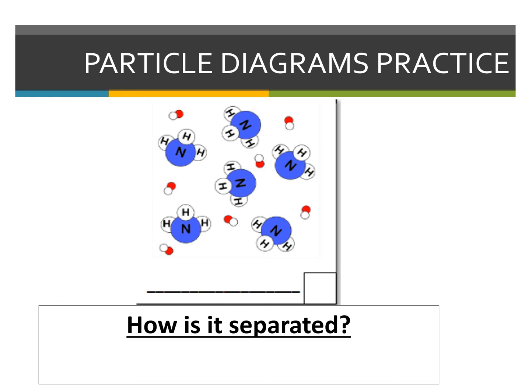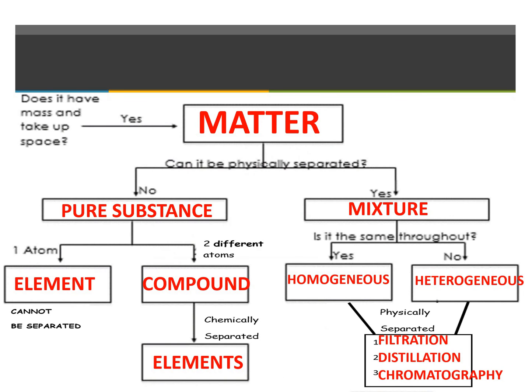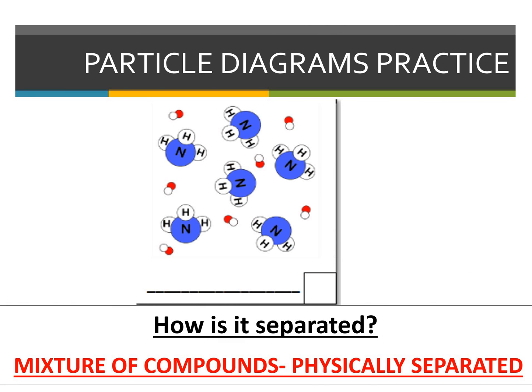Next up we have this item. We see that we have nitrogens and hydrogens — they are touching, which means they're chemically combined, making it a compound because it's two or more atoms together. We also see a white particle and a red particle that are smaller — those are also touching, meaning they're chemically combined. So I have two compounds, and they don't look the same in this particle diagram. Looking at my flow chart, it's going to be a mixture, and since they don't look the same, it's a heterogeneous mixture, which means I can physically separate it. So this is a mixture of compounds, and it can be physically separated.